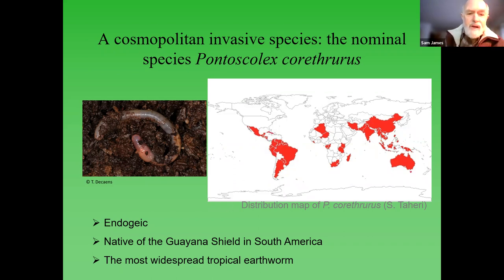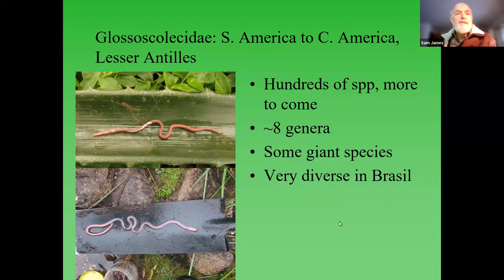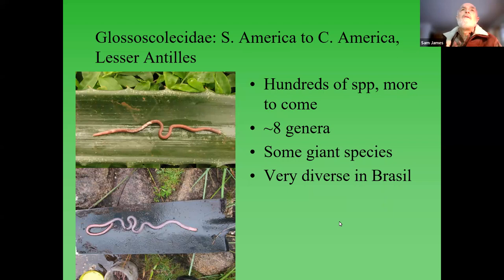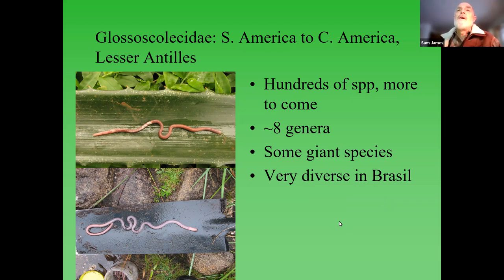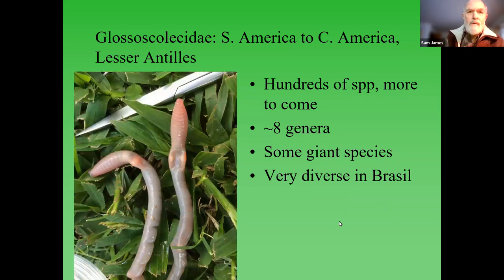Another family unique to the Neotropics in South America and somewhat in Central America, with some outliers in the Antilles, is the Glossoscolecidae. We keep finding more and more of these in Brazil - a huge range of sizes, from delicate slender little ones to meter-long, two-centimeter-diameter monsters. Very characteristic of southern and southeastern Brazil, but with other members scattered throughout the rest of South America except the Andean region. You can find them in Colombia, Peru, and Venezuela. This is a diverse group - here's one from southern Brazil, the state of Rio Grande do Sul.